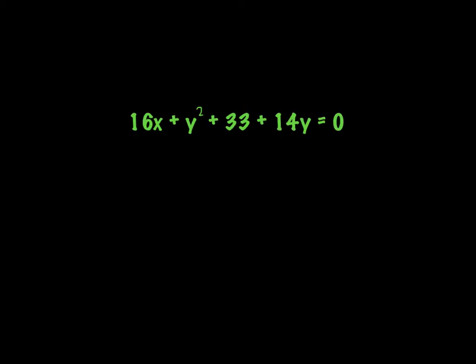Now we're going to look at this one. Immediately I know I have parabola, ellipse, circle, hyperbola as options. I see only one squared term right here, which means it has to be a parabola.